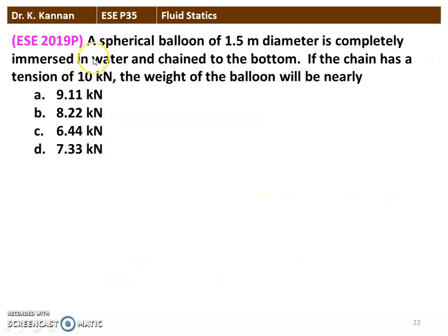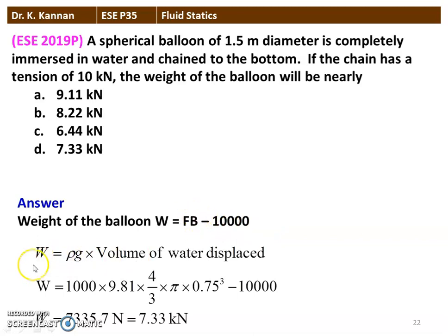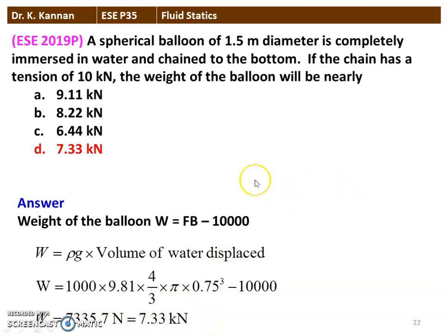The next question from the 2019 question paper. A spherical balloon of 1.5 meter diameter is completely immersed in water and chained to the bottom. If the chain has a tension of 10 kN, the weight of the balloon will be nearly: W = FB − 10,000 = ρ_w × g × (4/3 × π × 0.75³) − 10,000 = 1000 × 9.81 × (4/3 × π × 0.75³) − 10,000 = 733.5 N ≈ 7.33 kN. The weight of the balloon is 7.33 kN.